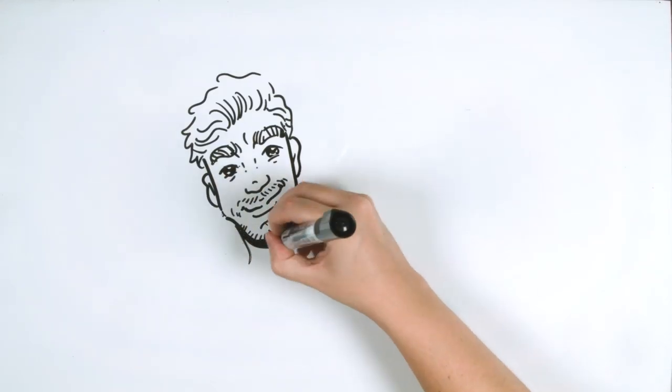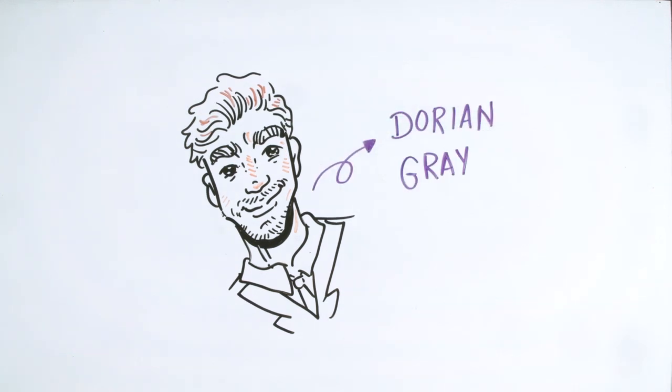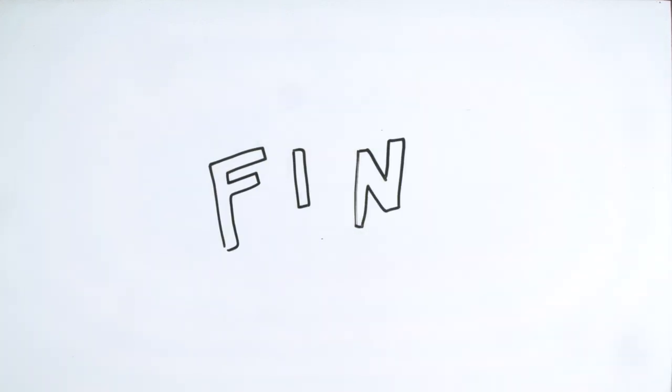It is testament to the significance of this work that, in Western culture, a vain person who gives great importance to his appearance is called Dorian Gray. We hope this long summary has been of help. Tell us in the comments section what other classic work you would like us to summarize in ten minutes, and subscribe until the next video.